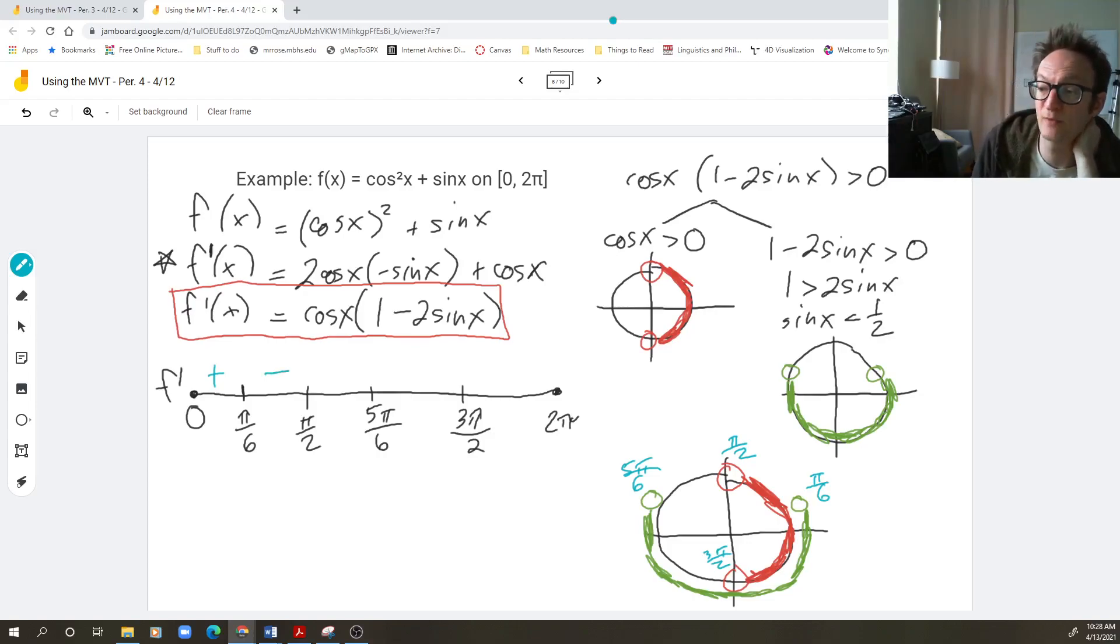Going a little faster now, on the interval from pi over two to five pi over six, neither of them are shaded, which means that both of these are negative, which means that the product is positive. And from five pi over six to three pi over two, the green is shaded, but the red isn't. So that means this factor is positive, but this factor is negative. Therefore, the product is negative. And back to three pi over two to two pi, they're both shaded. So they're both positive. So the product is positive.